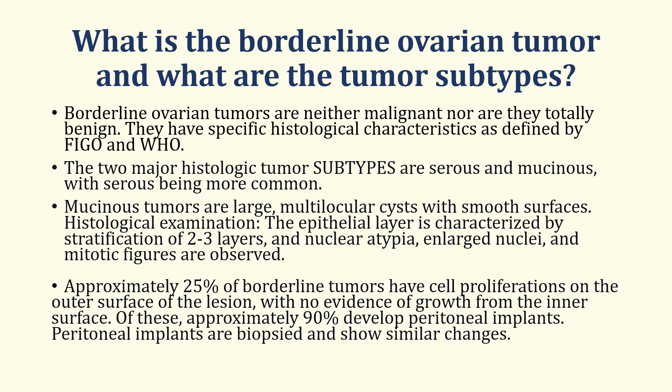Approximately 25% of borderline tumors have cell proliferations on the outer surface of the lesion with no evidence of growth from the inner surface. Of these, approximately 90% develop peritoneal implants. Peritoneal implants are biopsied and show similar changes. If you were able to answer even the first two points in this question, that is good enough, but if you can answer the last two as well, that would be excellent.